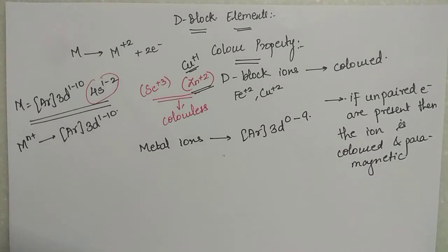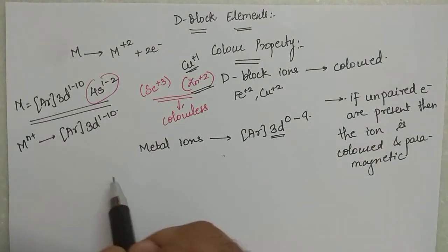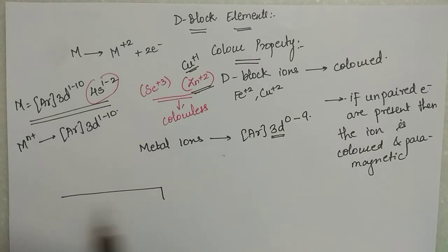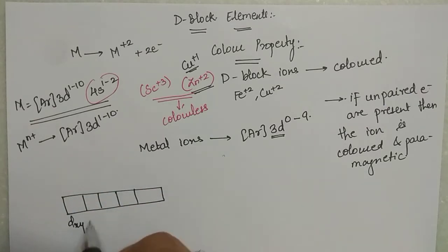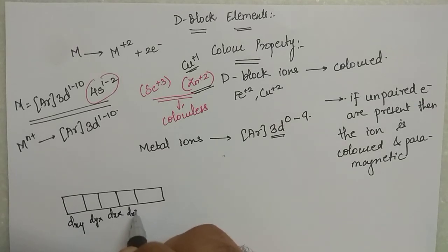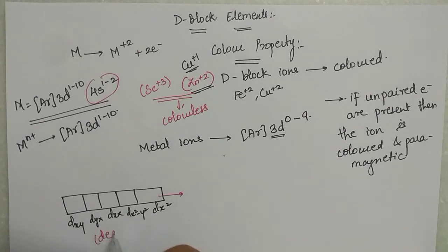Now, the 3d sub-shell has 5 orbitals, and usually these 5 orbitals are degenerate — meaning they have the same energy. The 5 orbitals are dxy, dyz, dxz, dx²-y², and dz². Usually these 5 orbitals have the same energy; they are degenerate.